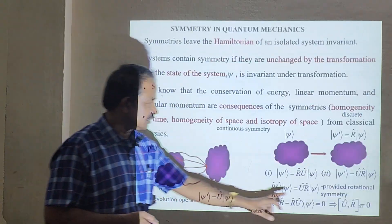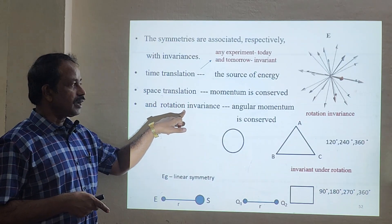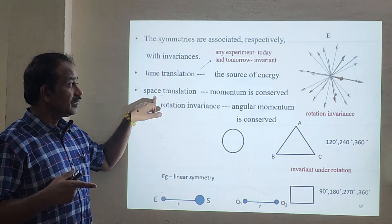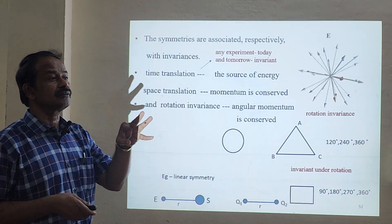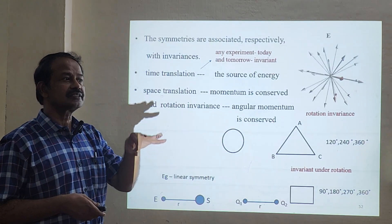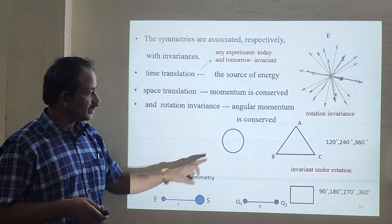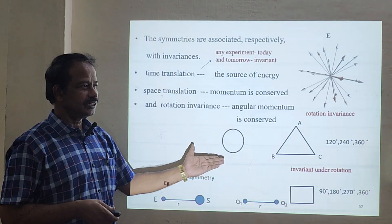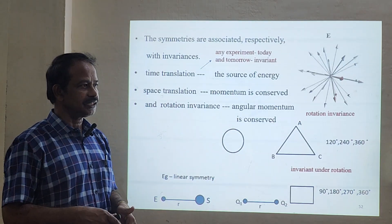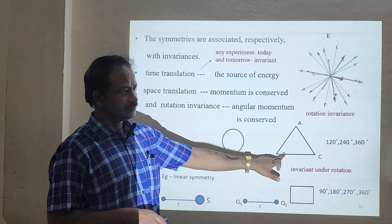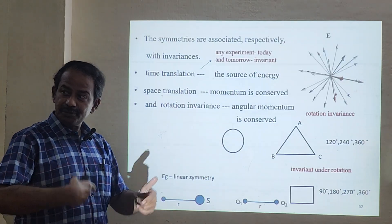Let's look at specific examples. For rotation — rotating a system by 120°, 240°, or 360° — the answer will be the same. The second and third rotations are called generators of rotation; they are all invariant under rotation. Similarly for a square, rotating by 90°, 180°, 270°, and 360° — these are all generators of rotations.